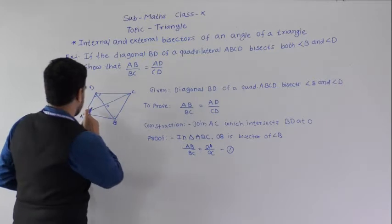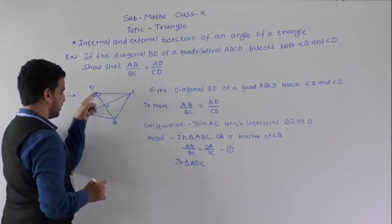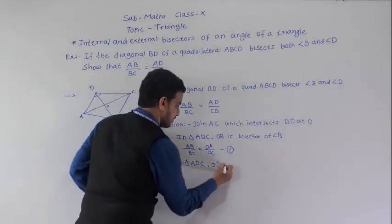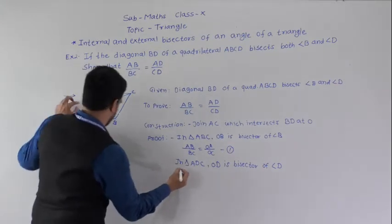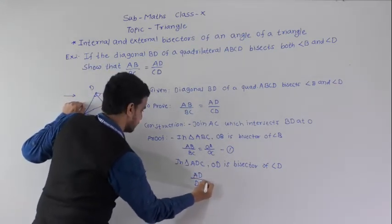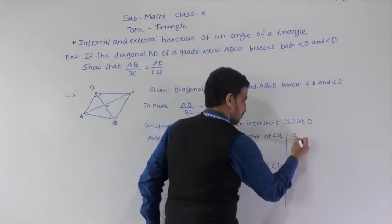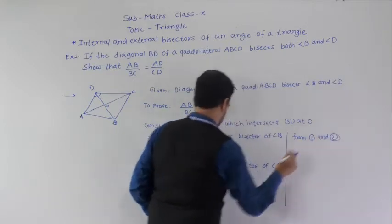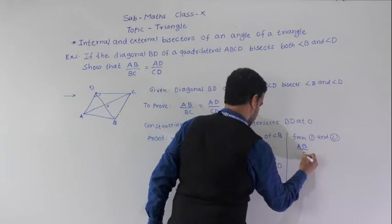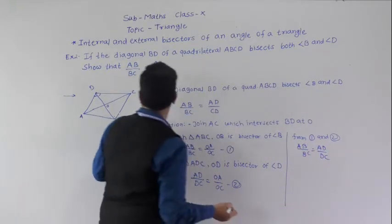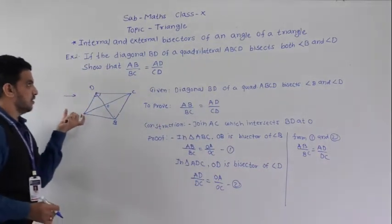Similarly, in triangle ADC, OD is the bisector of angle D. Therefore AD/DC = OA/OC. This is equation 2. From equations 1 and 2, the right-hand sides are equal, so AB/BC = AD/DC, which is what we had to prove.